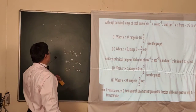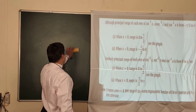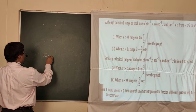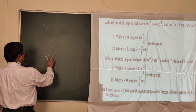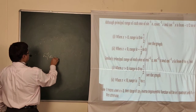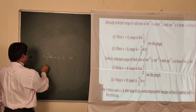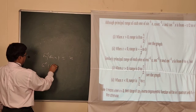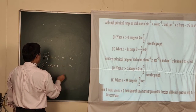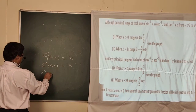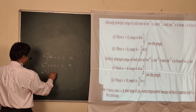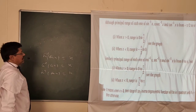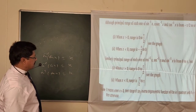Now some other relations: sin(sin⁻¹x) = x. Cos(cos⁻¹x) = x. Similarly tan(tan⁻¹x) = x. The same holds for all other trigonometric ratios.